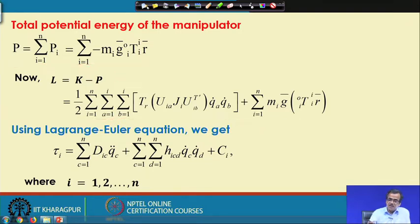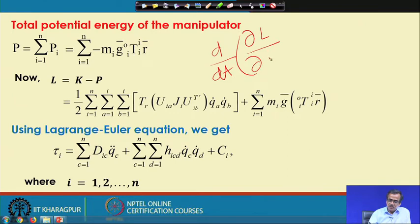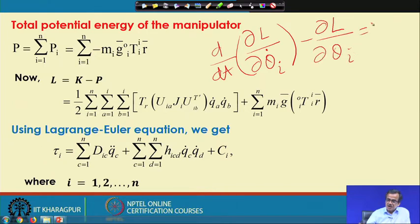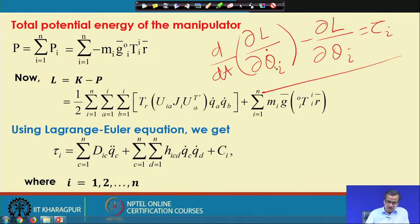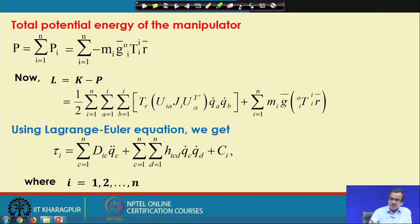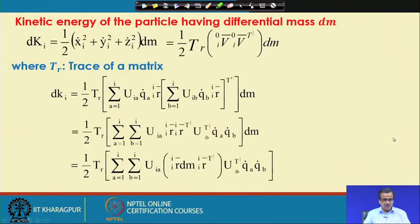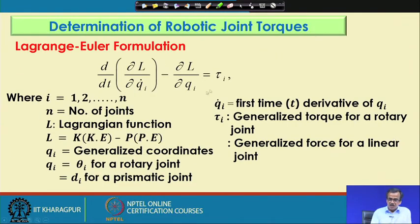Now what we do is apply the Lagrangian equation: d/dt of the partial derivative of L with respect to theta_i dot, minus the partial derivative of L with respect to theta_i, equals tau_i. In place of theta_i, we can put qi — it is the same expression. Let me go back to that particular expression once again.